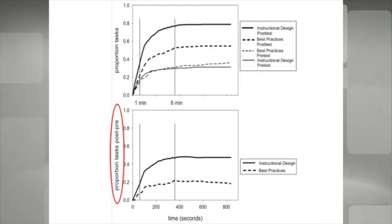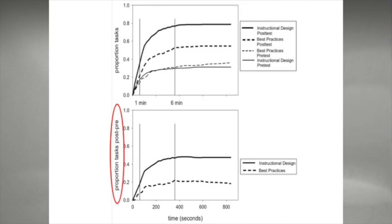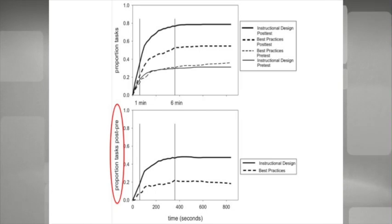At the post-test minus pre-test learning outcomes comparison, the teams who attended the ID-based training format executed a greater number of tasks in a shorter time length, with large effect sizes for relevant subscales, such as communication.